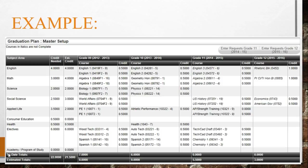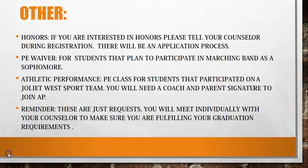We will meet with each individual student to discuss the course requests and determine if that is the appropriate schedule. If there are any questions, students should bring those to school in January to discuss with the counselor. If you are interested in honors, please tell your counselor during registration, as there will be an application process. Students that plan on participating in Marching Band may be eligible for a PE waiver. Athletic Performance is a PE class for students that participate on a Joliet West sports team. Please remember the courses selected by students are requests; the final schedule will be completed with counselors in January and February.